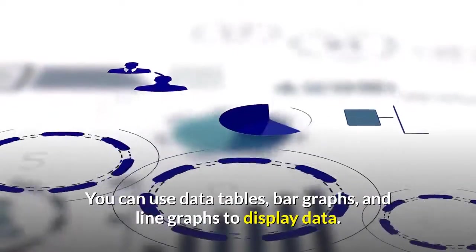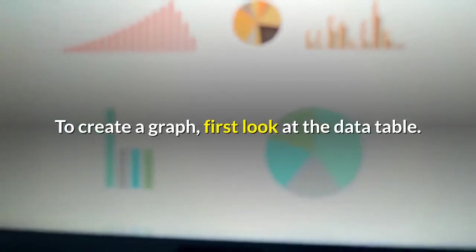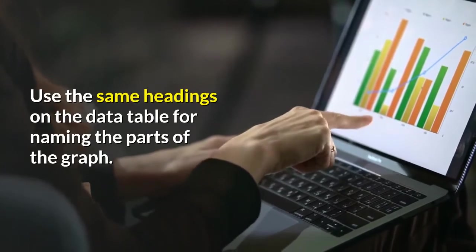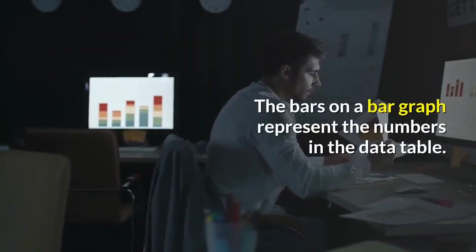How to do it? You can use data tables, bar graphs, and line graphs to display data. To create a graph, first look at the data table. Use the same headings on the data table for naming the parts of the graph. The bars on a bar graph represent the numbers in the data table.